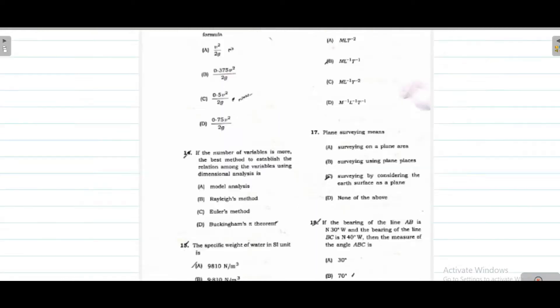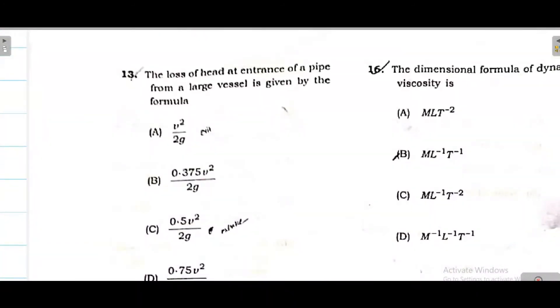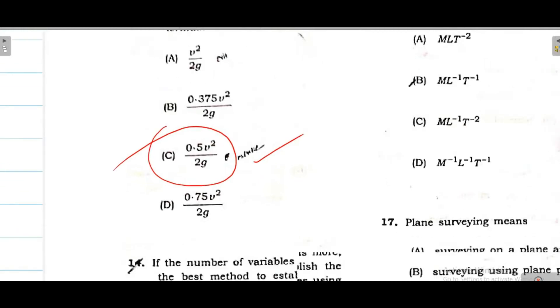Next, fluid mechanics. The loss of head at entrance of a pipe from a large vessel is given by the formula. For entrance, the formula is 0.5 V square by 2g. If it is for exit, then V square by 2g. Entrance is 0.5, exit is V square by 2g.